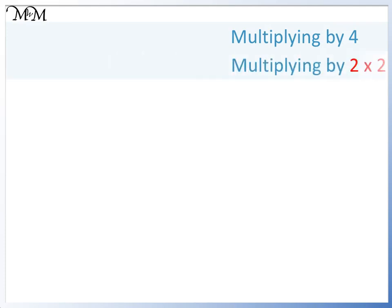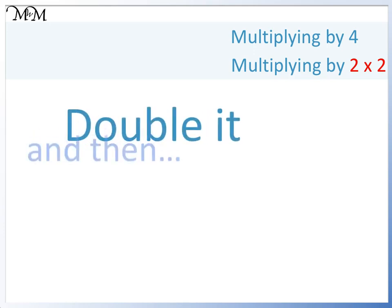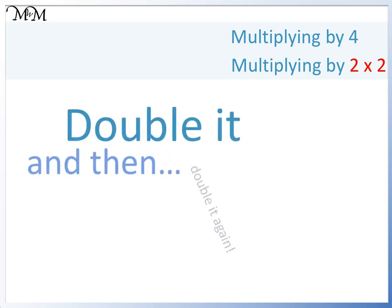Because 4 is 2 times 2, we can simply double it and then double it again.